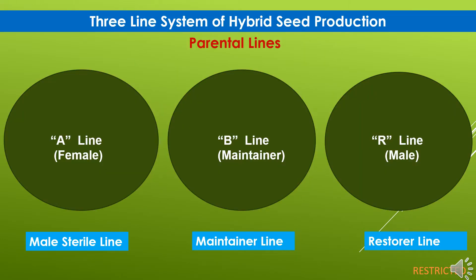In the three-line system of hybrid seed production, three parental lines are used. These parents are known as A line, B line and R line. A line is the female line, generally known as the male sterile line, meaning the male is sterile and not functional — even if pollen is available, it has no compatibility to pollinate. B line is the maintainer line. R line is the male line, known as the restorer line, and plays a very important role in hybrid seed production.